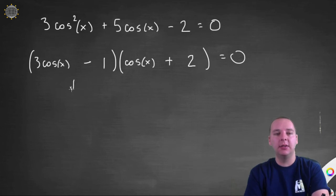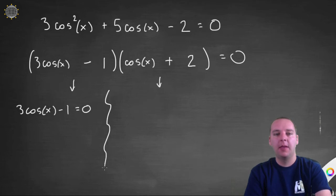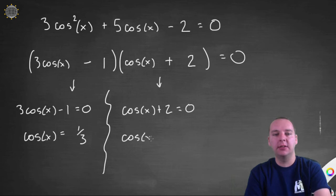And so we can set each of these guys independently equal to 0. So we'd have 3 cosine x minus 1 equals 0, or cosine x plus 2 equals 0. Solve both of these guys for cosine x, so we'd have cosine x equals 1 third, and cosine x equals negative 2.